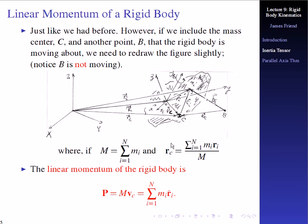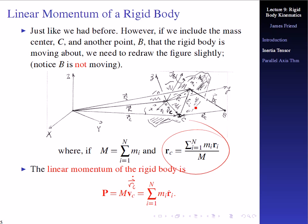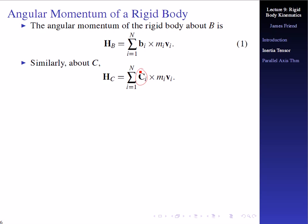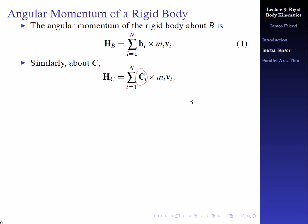The linear momentum is capital P = M times the velocity of the center of mass, R sub C dot — which is the sum of M sub i times R sub i dot from i equals one to N. The angular momentum about point B is the moment arm B sub i crossed with the linear momentum M sub i V sub i. About C, the moment arm is C sub i, so H sub C equals C sub i cross M sub i V sub i, where V sub i equals R sub i dot.